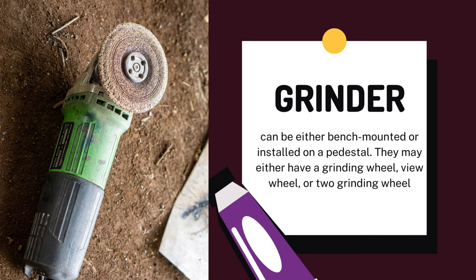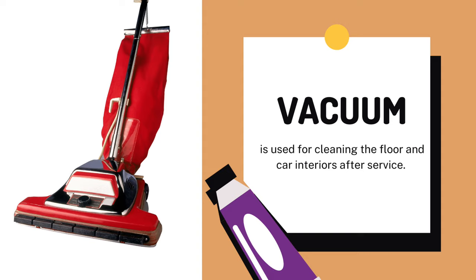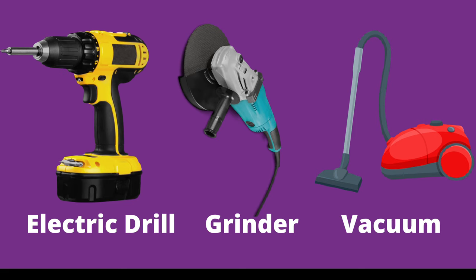Next, we have the grinder. It can be either bench-mounted or installed on a pedestal. It may have a grinding wheel, wire wheel, or two grinding wheels. Last, we have the vacuum, which is used for cleaning the floor and car interiors after service. These are the machine tools: electric drill, grinder, and vacuum.